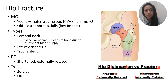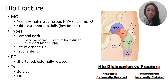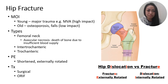Starting with the mechanism of injury. For a relatively young patient, the mechanism of injury is usually a major trauma like a motor vehicle accident involving a high impact collision fracturing the hip. For older patients, this can be attributed to bone pathologies like osteoporosis, or osteoporosis combined with a fall — more like low impact injuries.